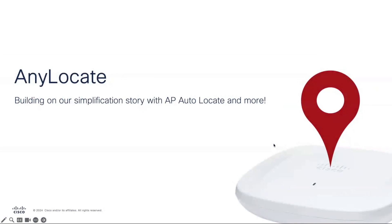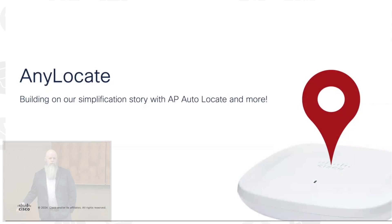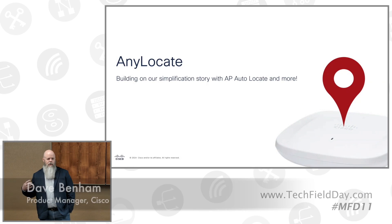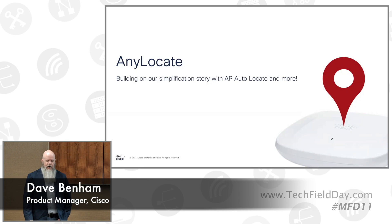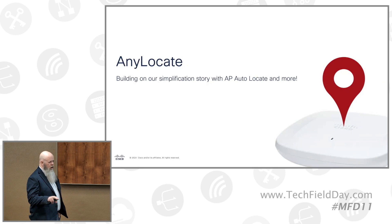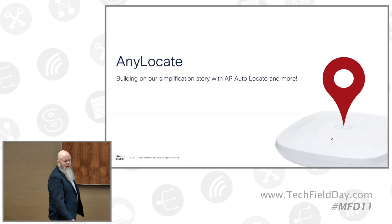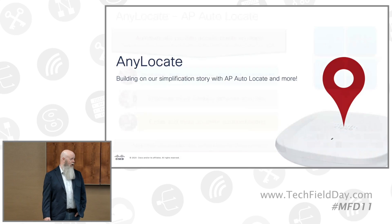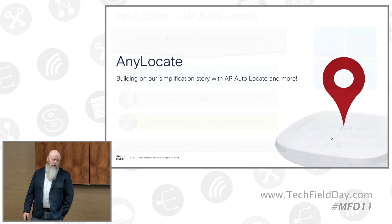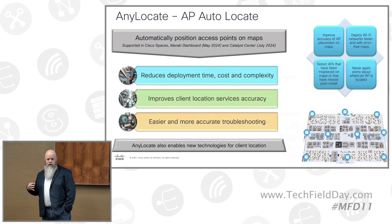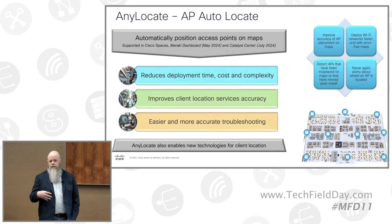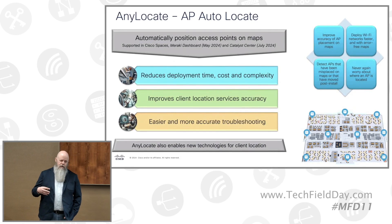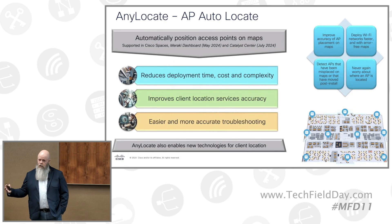Anylocate is our product family for some of our next generation location services features, and I'm going to talk to you about one and a half of those today. First I'll talk to you about AP Autolocate, which is our ability to automatically position access points on maps. I touched on this during the last Mobility Field Day at the end, and we've come a long way since then.